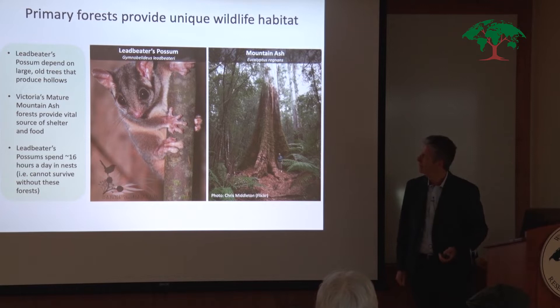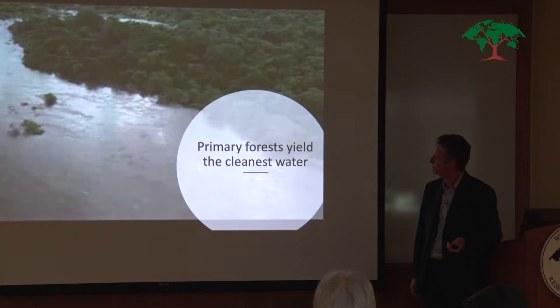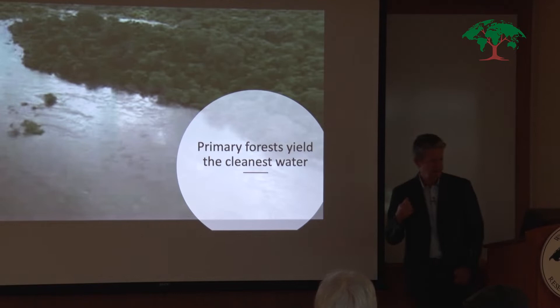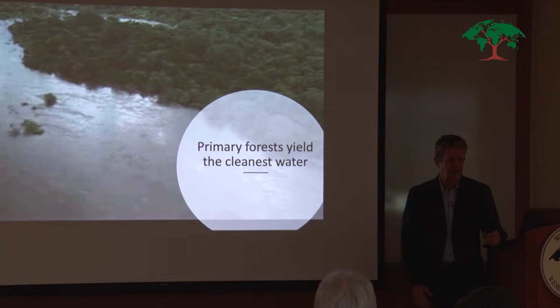Many, many wildlife species are dependent upon habitat features and characteristics only found in primary forests. Primary forests are also incredibly important for water supply — a watershed covered in primary forest yields the cleanest water. As soon as you start logging it, you cause soil erosion and increase sediment flow, and the water gets murky. From a water supply point of view, you want the clean water that a primary forest provides.